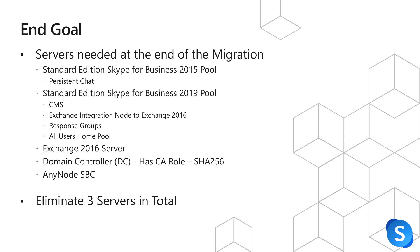Our brand new Skype for Business Server 2019 pool is now going to be the central management store for the environment. It will also be the Exchange integration node to Exchange 2016, along with having all the users and response groups homed on it. We are keeping the Exchange 2016 server but eliminating the Exchange 2013 server. We are also keeping the domain controller with the SHA-256 CA role and retaining the Anynode SBC.